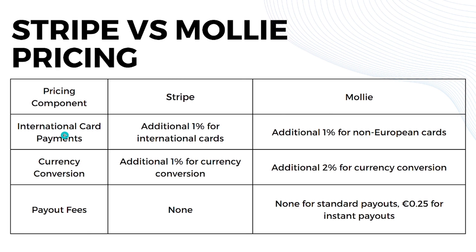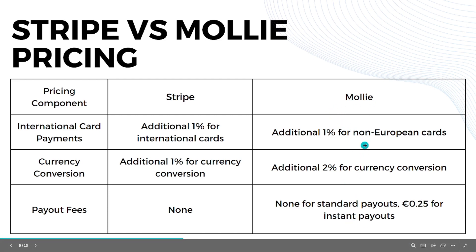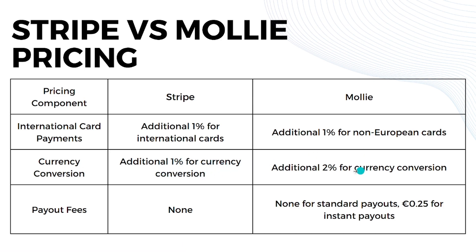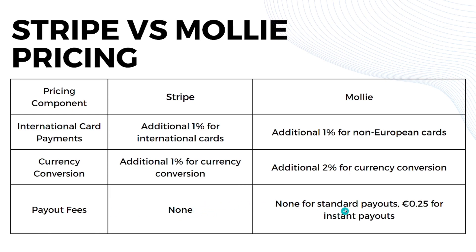For international card payments, Stripe adds an additional 1% for international cards, while Mollie adds an additional 1% for non-European cards. For currency conversion, Stripe charges an additional 1% while Mollie charges 2%. For payouts, Stripe has no payout fees, and Mollie has no fees for standard payouts but charges €0.25 for instant payouts.